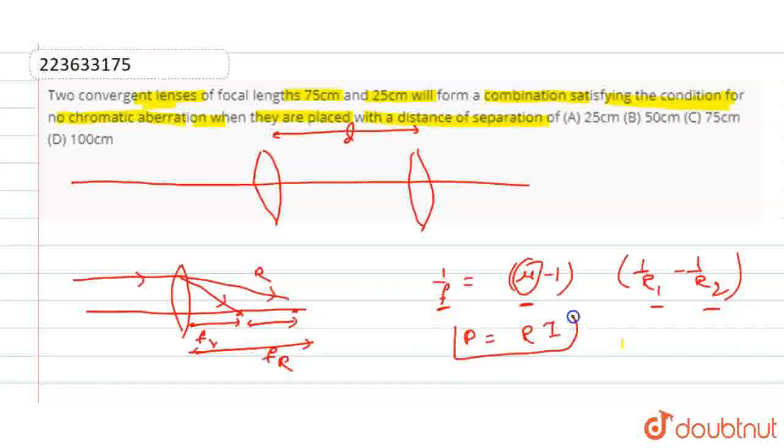If focal length depends on mu and the refractive index is different, then power depends on the refractive index. If the power variation with refractive index is zero, then the chromatic aberration will be finished. We will do this: dp by dn equal to zero.